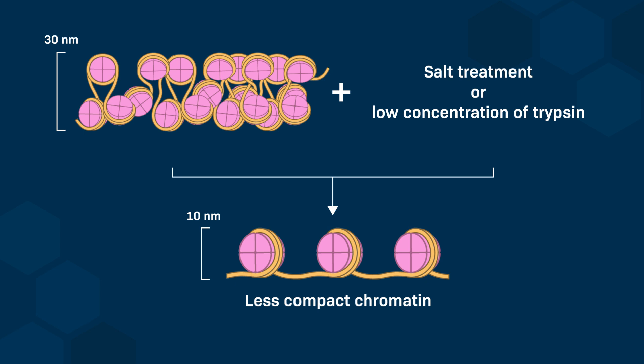Upon analyzing the protein content of these fibers and comparing it with the protein content of the native chromatin fiber, we find that the four histones associated with the core are present: H2A, H2B, H3, and H4. However, histone H1 is absent in the 10 nm fiber compared to the native chromatin fiber. This absence indicates that histone H1, while not part of the histone core, contributes to the formation of the 30 nm fiber.